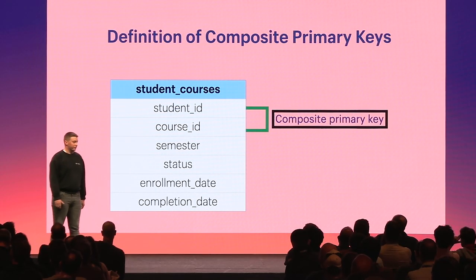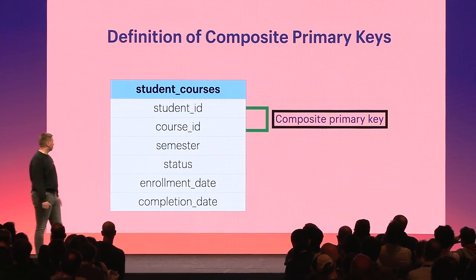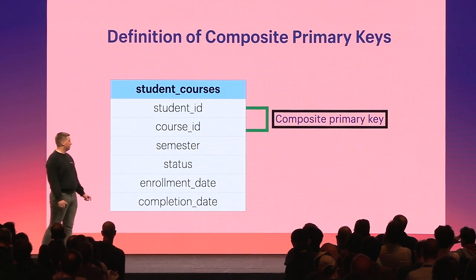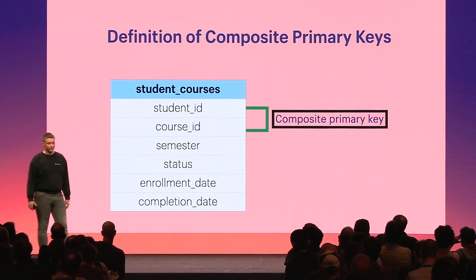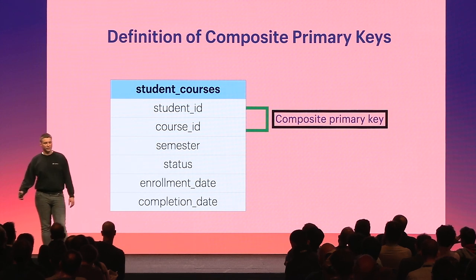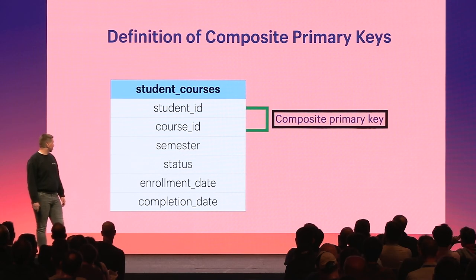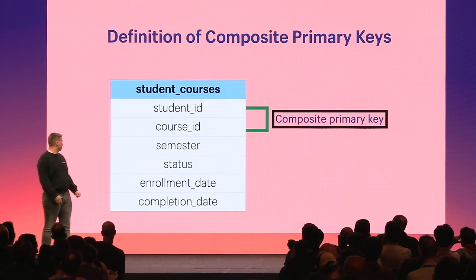A composite primary key is a type of primary key made up of two or more columns that uniquely identify a row in a table. They play a crucial role in database schema designs when representing complex relationships that cannot be represented with a single column primary key. In this example, we have a student courses table identified by student ID and the course taken.